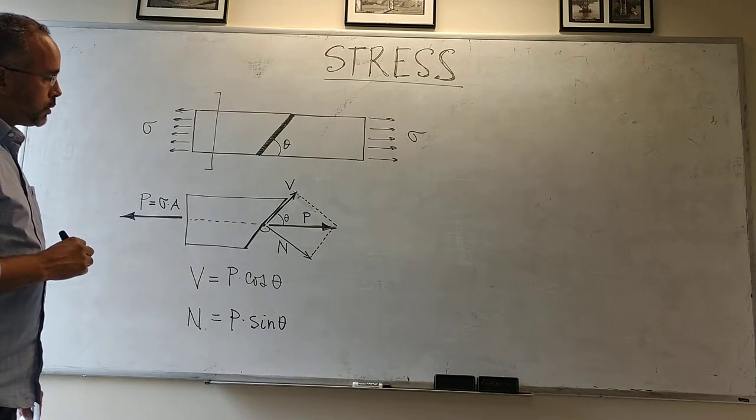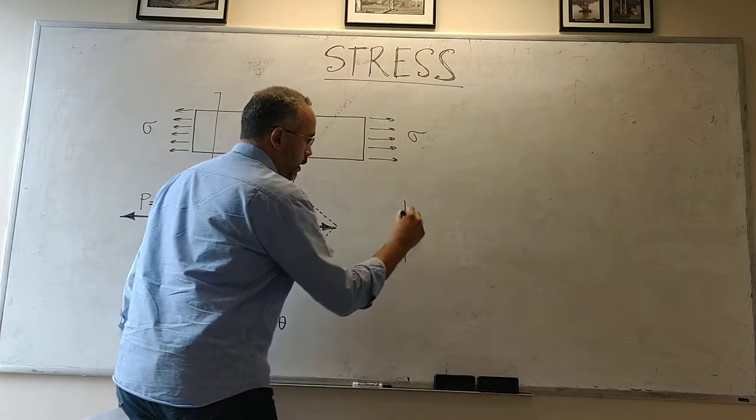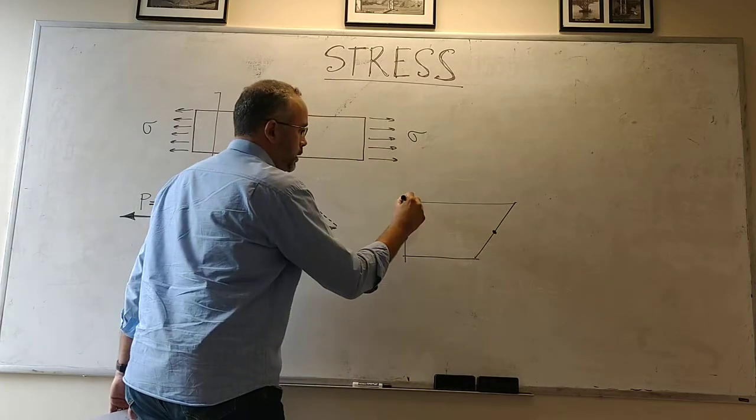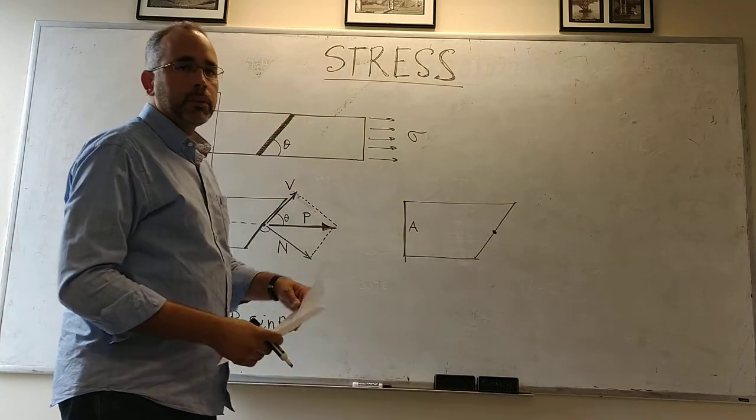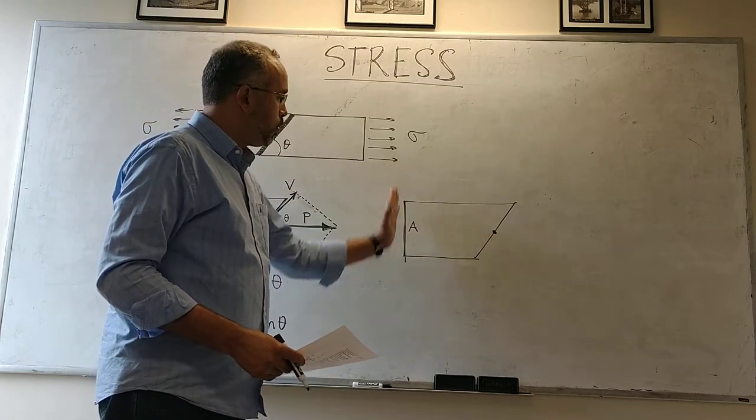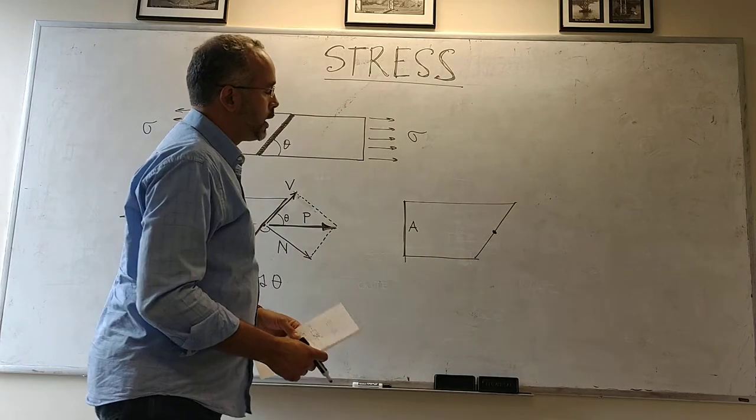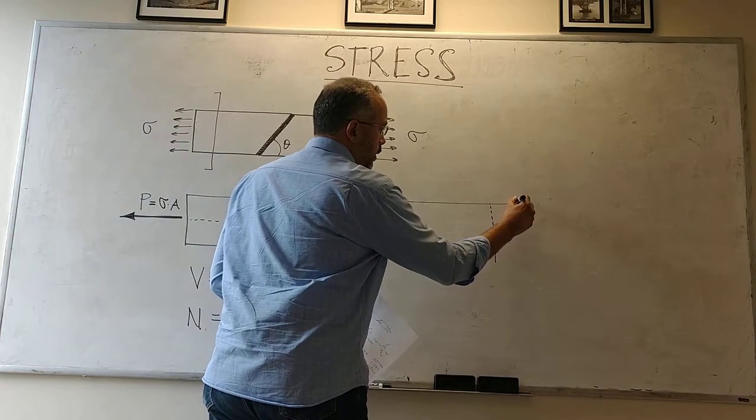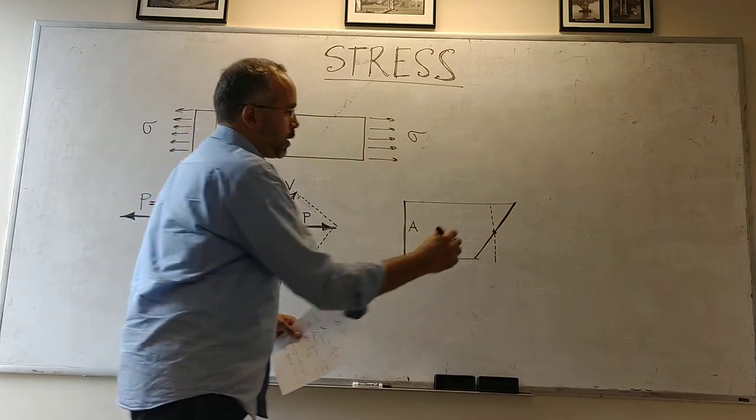If we look at the geometry of this again, this area here, this dimension is a. Let's say we're dealing with something like a rectangle, so it has a constant width, and it basically all boils down to this length, the inclined length. Since that's a, what is this length? We're going to call that a prime.